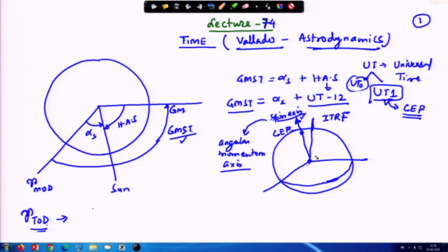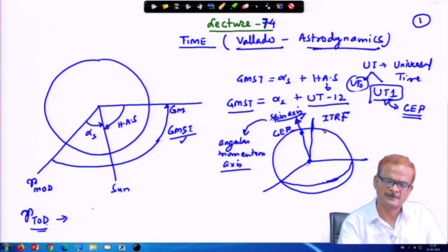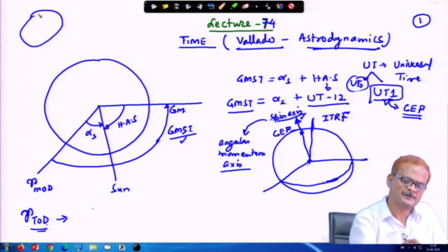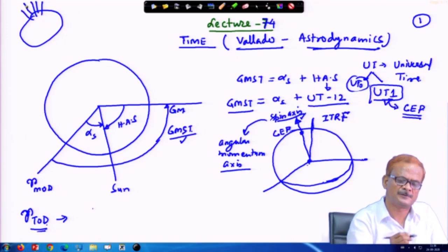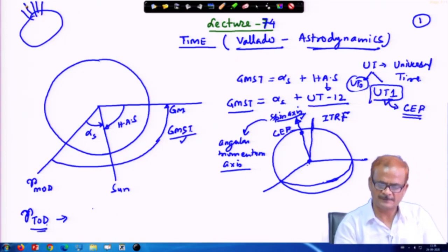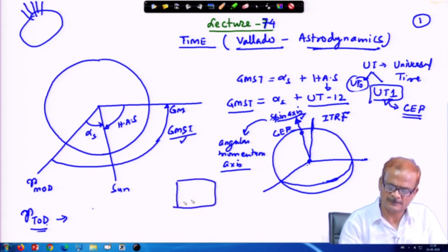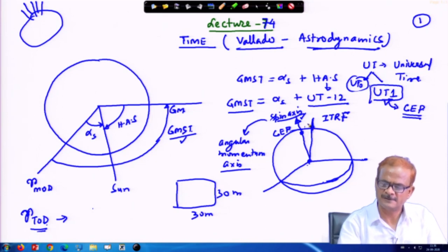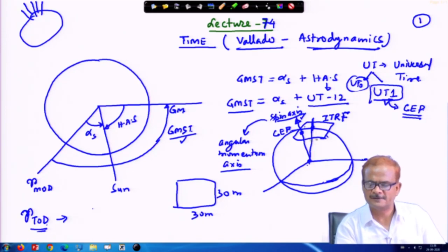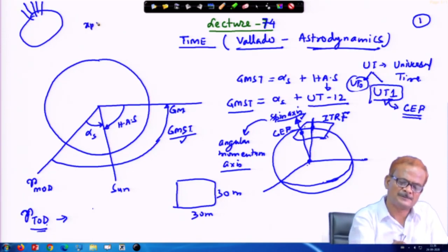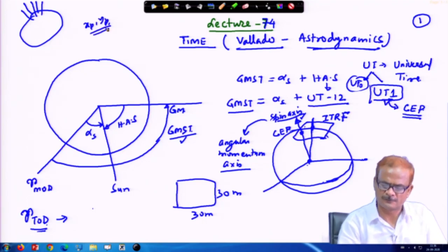I choose not to discuss all these dynamics here. The spin axis keeps moving within the figure of the earth — sometimes it is here, sometimes there — shifting in a square area of about 30 by 30 meters around the pole. This correction has already been applied in terms of x_p and y_p, which we have called the polar rotation.